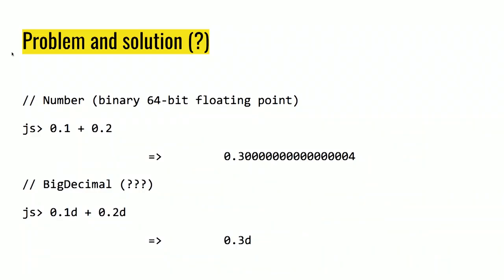Why are numbers broken in JavaScript? We have 0.1 plus 0.2. It's not about the plus operator being broken — it's about the literal 0.1 not being able to be represented accurately in binary floating point.